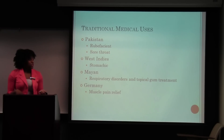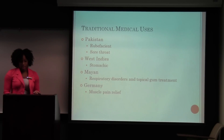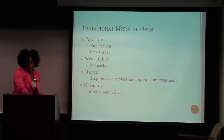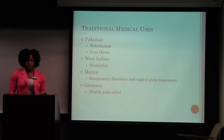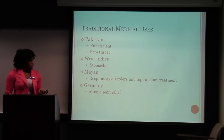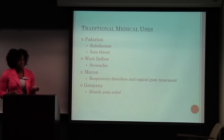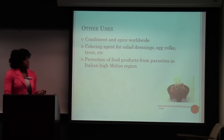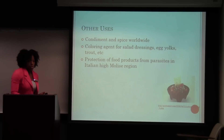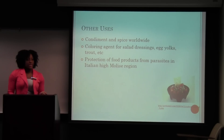In the West Indies, it's used to strengthen the stomach — they put it in a combination with onions, cucumbers, lemon juice, and something called madeira, and it's supposed to strengthen the stomach. In Mayan cultures, they used it for respiratory disorders, as well as a topical gum treatment. In Germany, they use it for muscle pain relief. It's also used worldwide as a spice and condiment, and as a coloring agent.